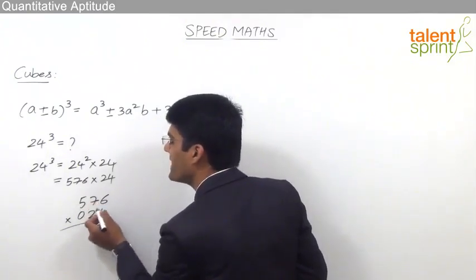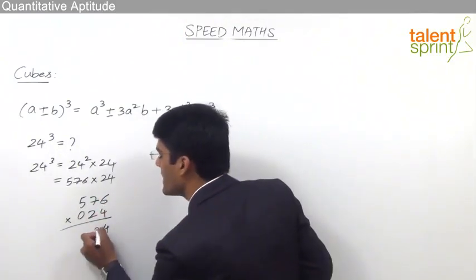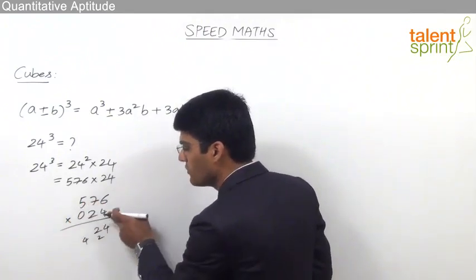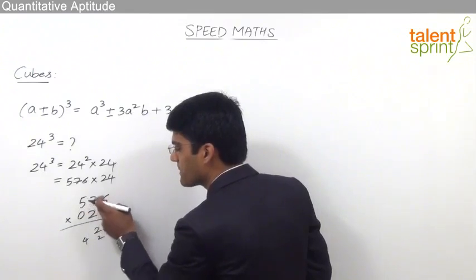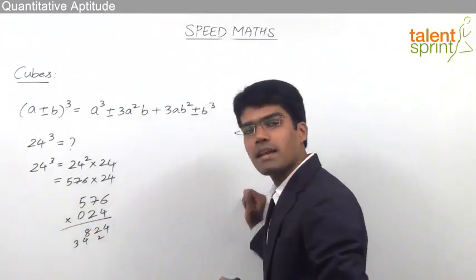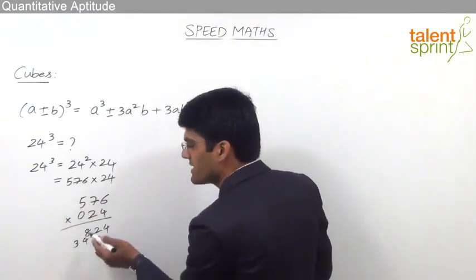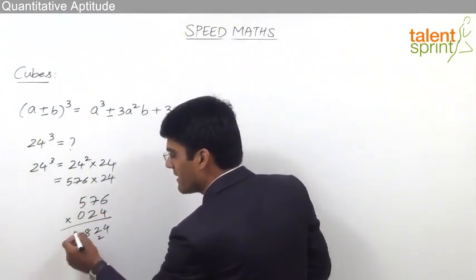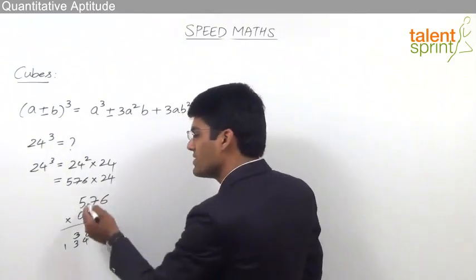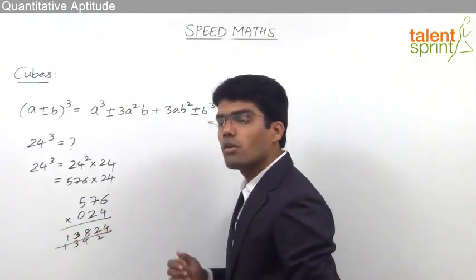The second step is cross multiplication: 7 into 4 is 28, and 6 into 2 is 12; 28 plus 12 is 40, plus the carry 2 gives 42 — write 2 and carry 4. Third step: 5 into 4 is 20, 6 into 0 is 0, 7 into 2 is 14; 20 plus 0 plus 14 is 34, plus carry 4 gives 38 — write 8 and carry 3. Fourth step: 5 into 2 is 10, plus carry 3 gives 13 — write 3 and carry 1. Last step: 0 plus carry 1 gives 1. Final answer: 13824.